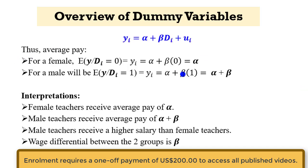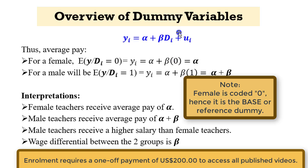Upon estimation, you are likely going to have this result. The average pay for a female — where d_i is 0 — means you substitute 0 for d_i. Beta times 0 becomes 0, and therefore the average pay for a female reduces to just alpha. For a male, remember male is coded as 1, so substituting 1 for d_i, the average pay for male equals alpha plus beta.